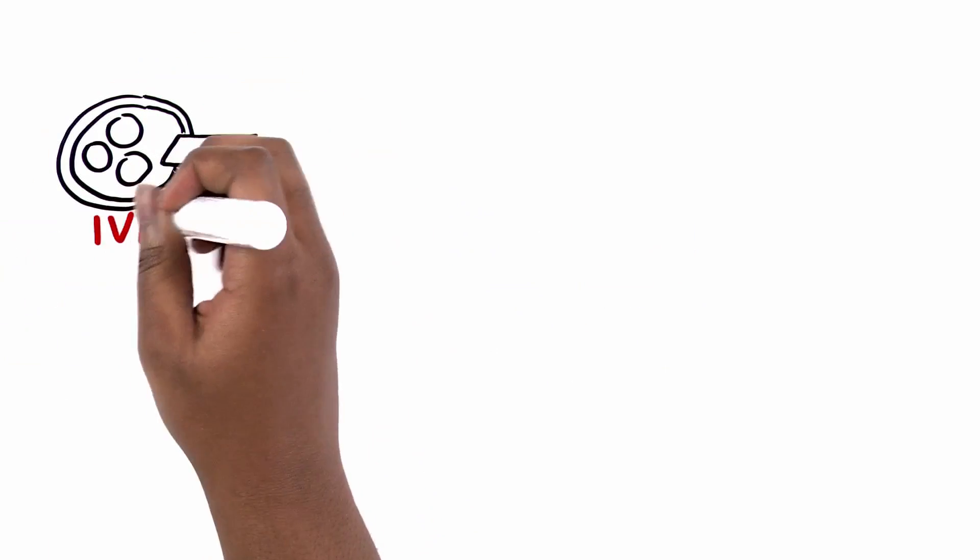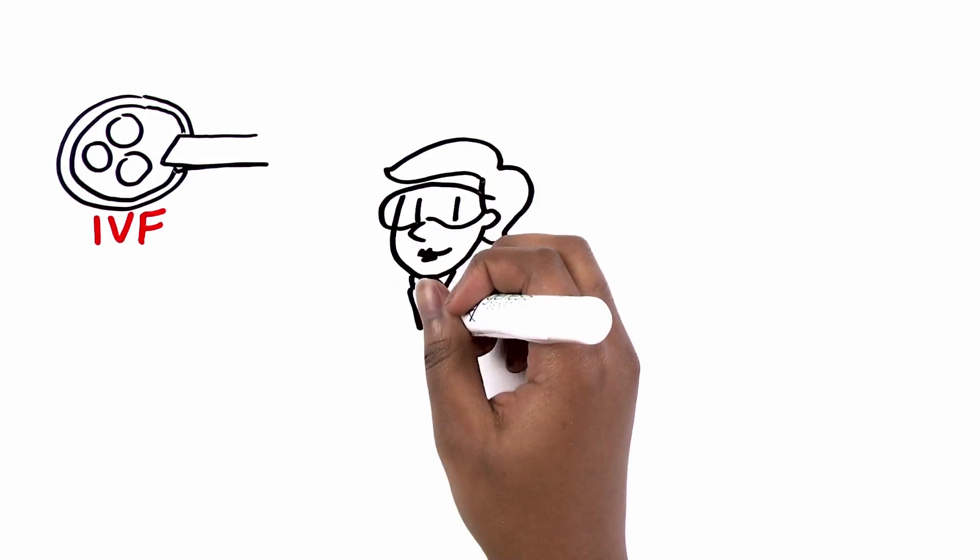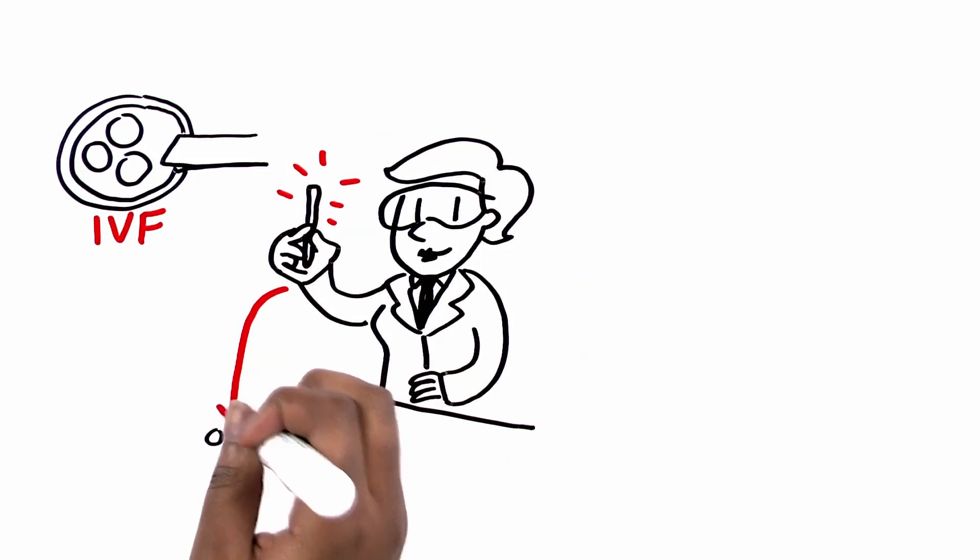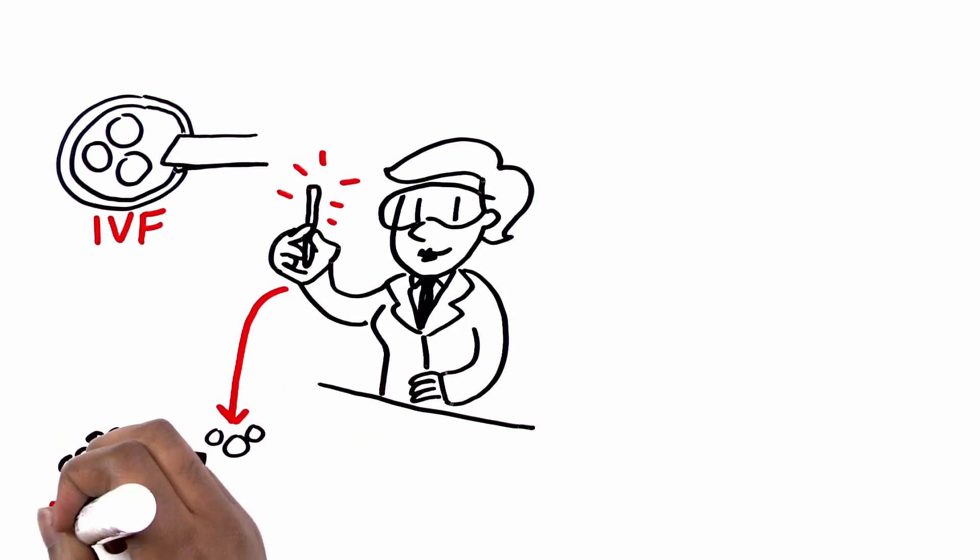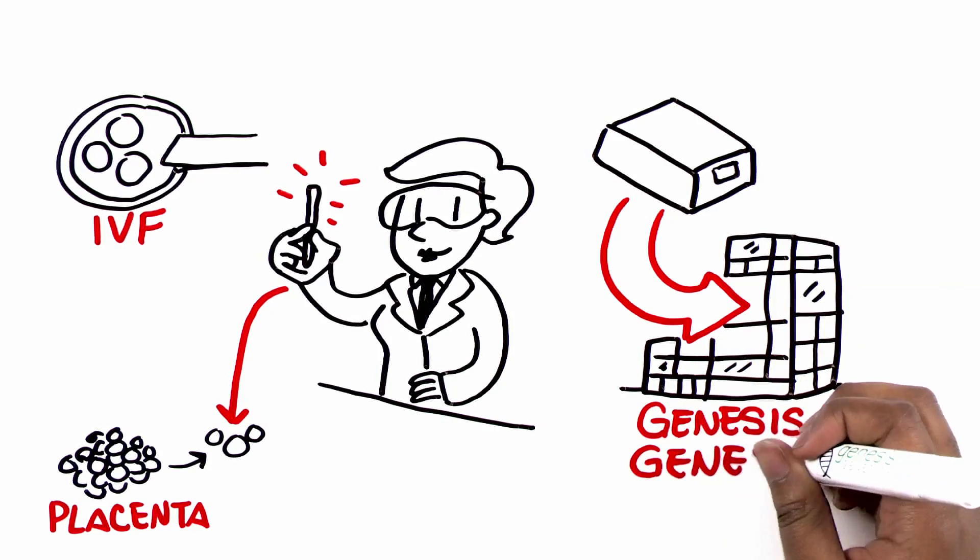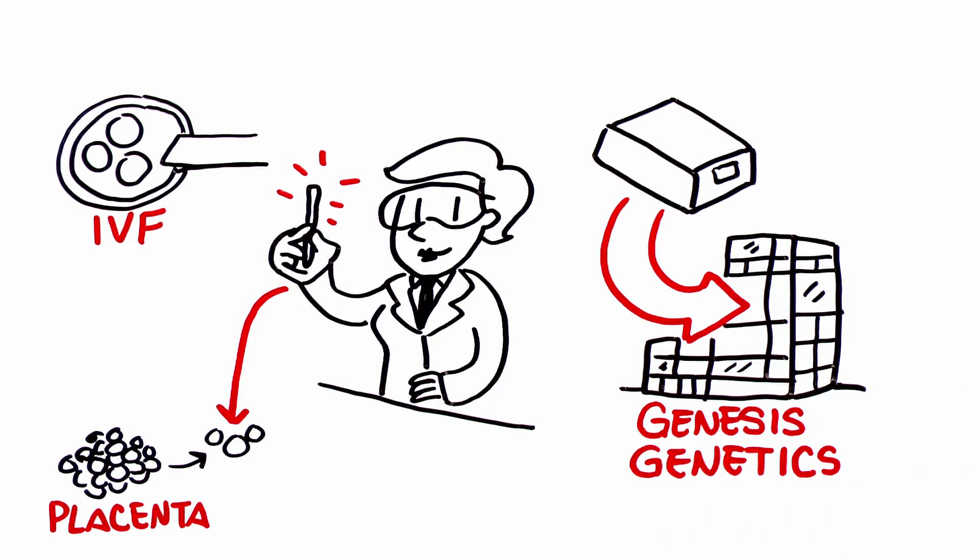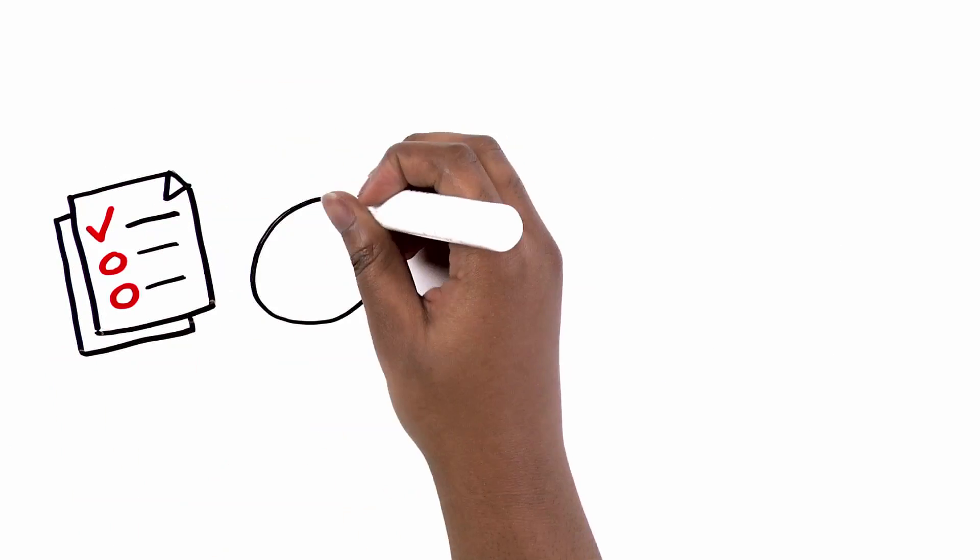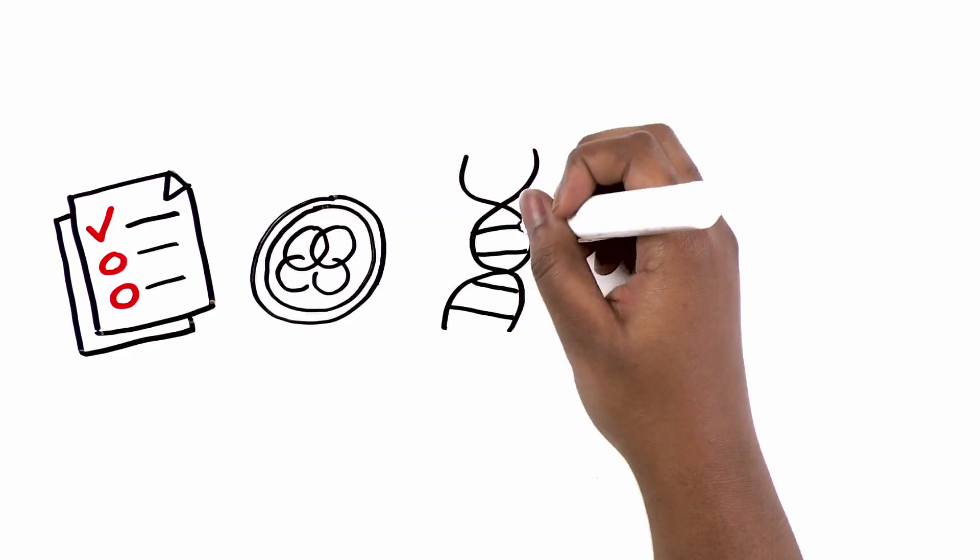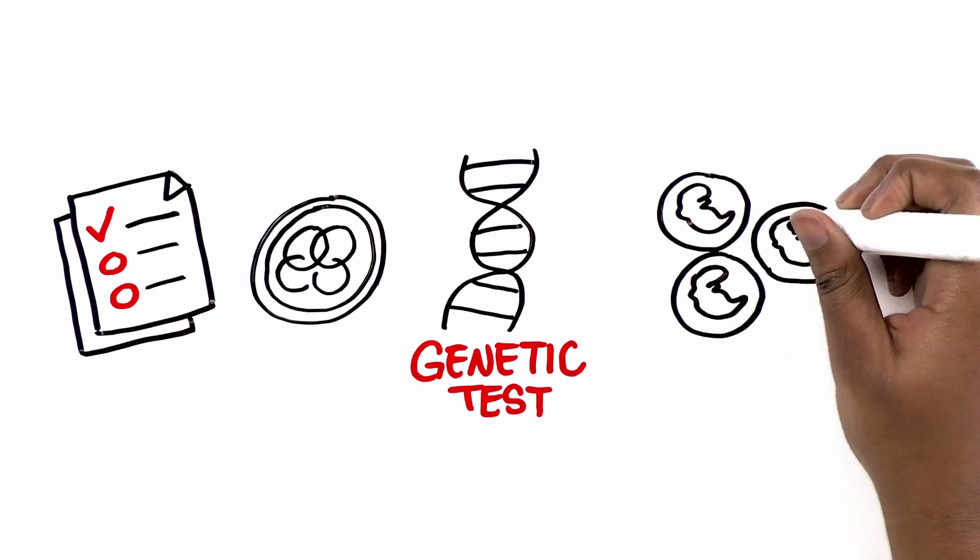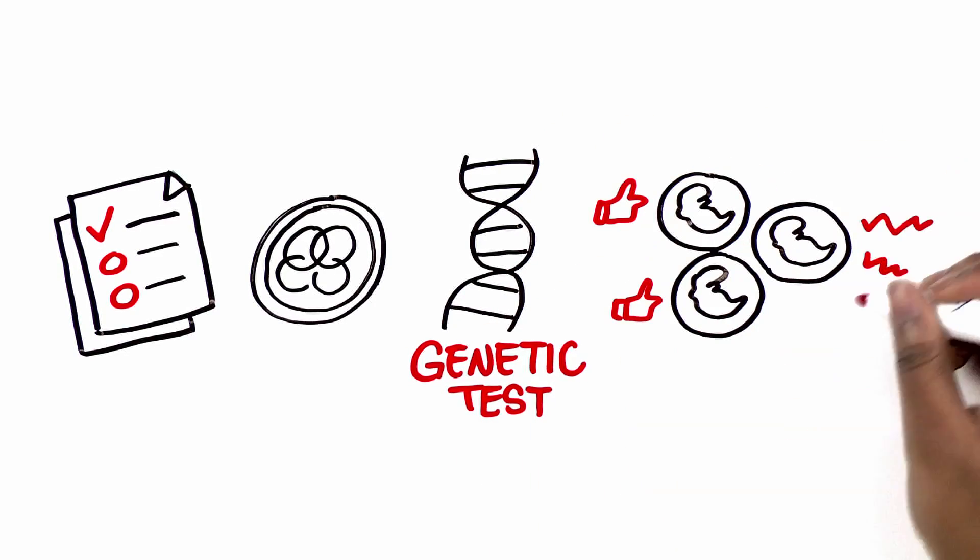Once your eggs are fertilized at your IVF center, an embryologist will perform a biopsy to remove just a few cells from the cluster that will eventually become the placenta, and then overnight them to a Genesis Genetics lab for testing. Your embryos will always stay safe at your clinic. We will then test the embryo biopsy samples using your family's unique genetic test to determine which of your embryos are affected with your family's disease and which ones are not.